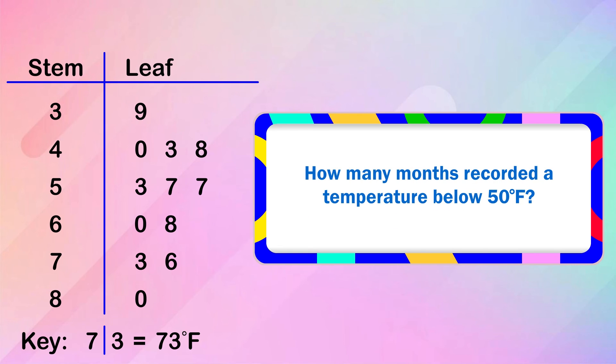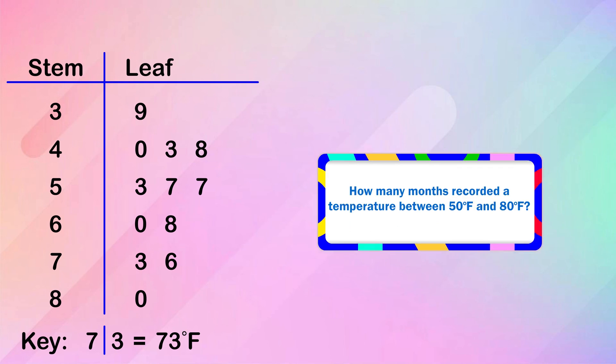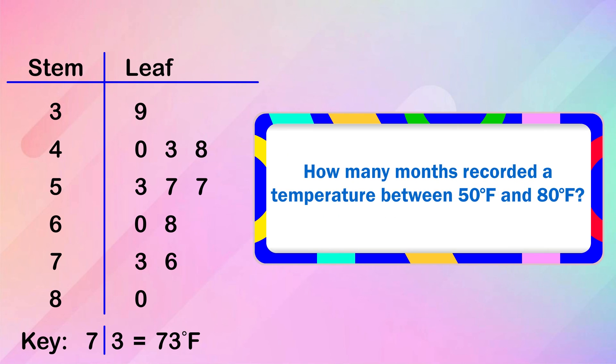How many months recorded a temperature below 50 degrees Fahrenheit? 4 months. How many months recorded a temperature of more than 60 degrees Fahrenheit? 4 months. How many months recorded a temperature between 50 degrees Fahrenheit and 80 degrees Fahrenheit? 7 months.